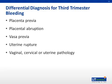Placenta previa is included in the differential diagnosis for third trimester bleeding. Other conditions that cause third trimester bleeding include placental abruption, which is a premature separation of the placenta from the uterus; vasa previa, when fetal vessels course over the internal cervical os; uterine rupture; and lastly, vaginal, cervical, or uterine pathology.